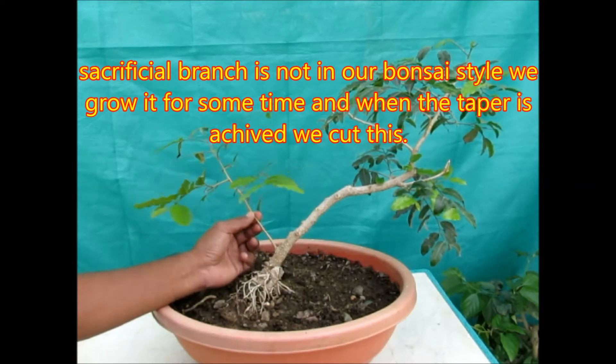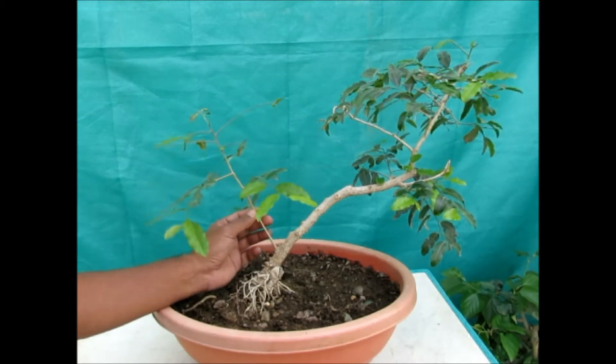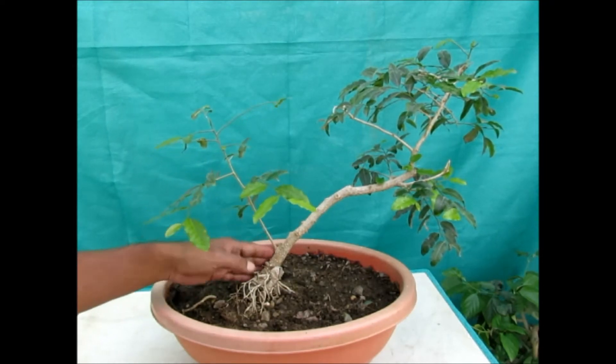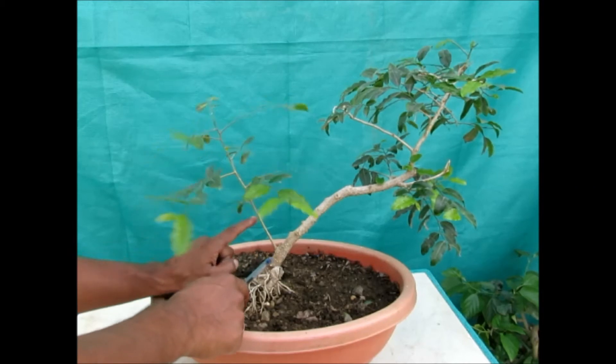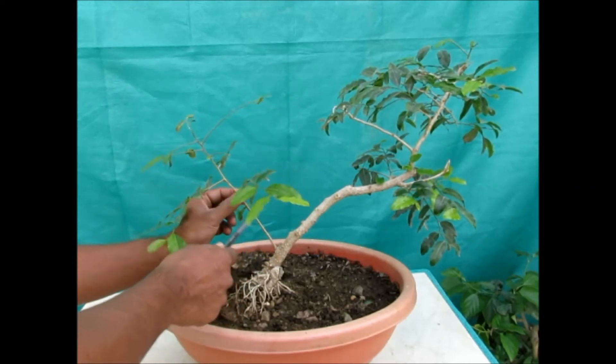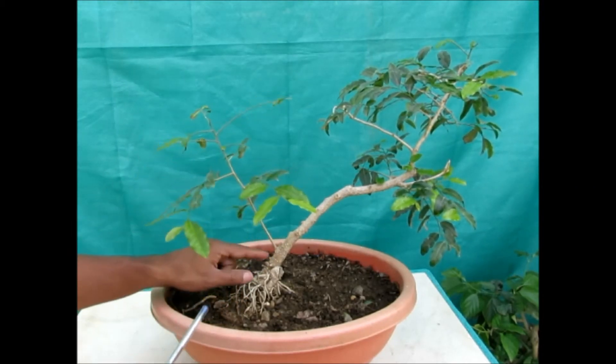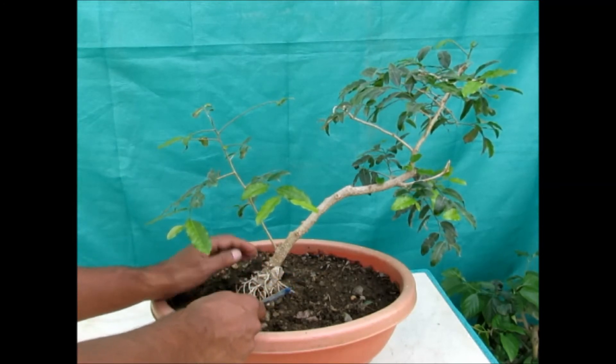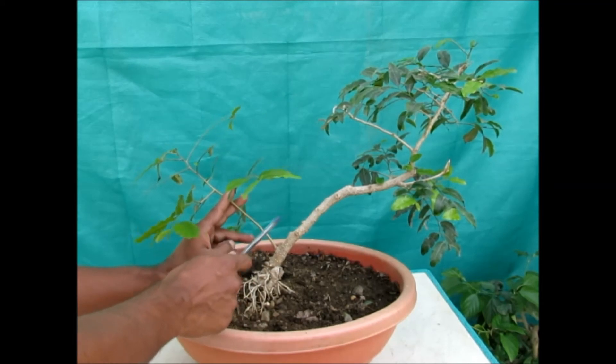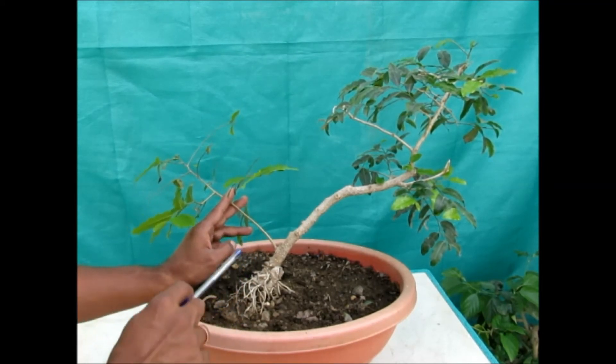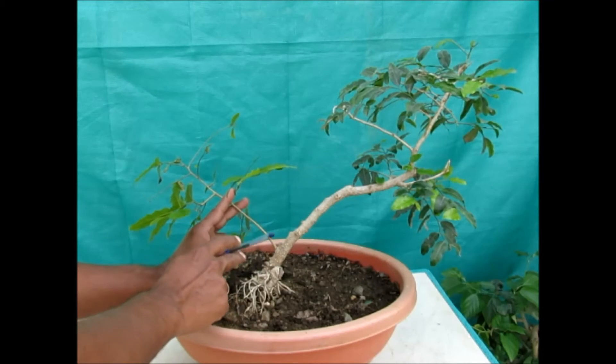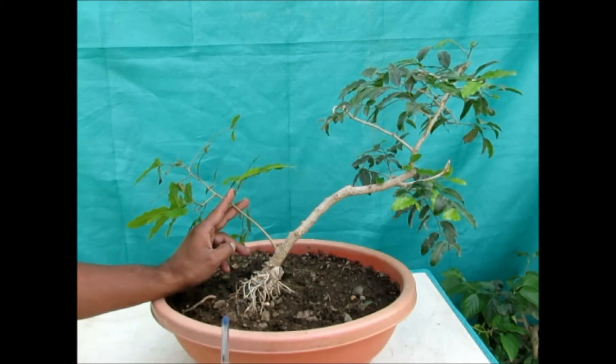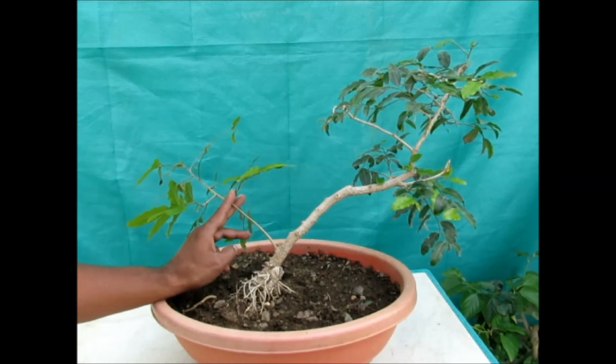It is a sacrificial branch. The sacrificial branch method helps the trunk to grow broader at base. If I let this branch grow for some time, then the trunk would become broader at base. So friends, this branch is not in my design. I will remove this after one or two years. My advice for beginner bonsai friends is that do not rush to design your plants.